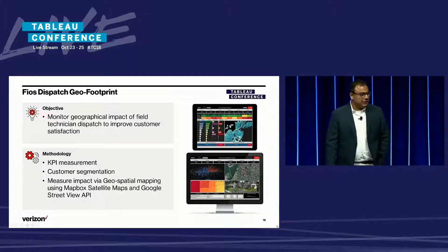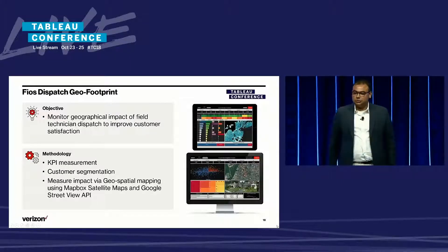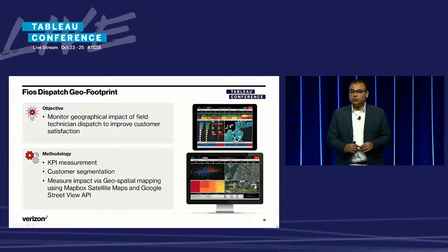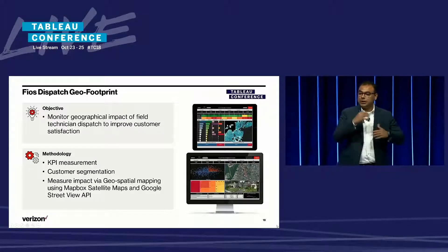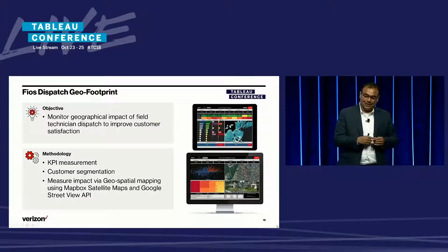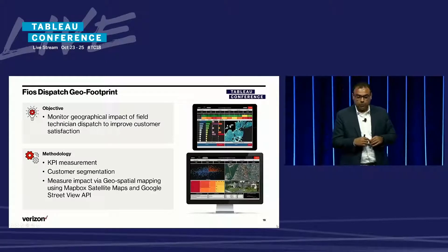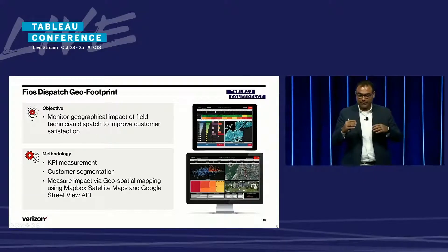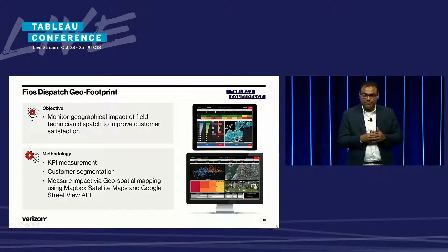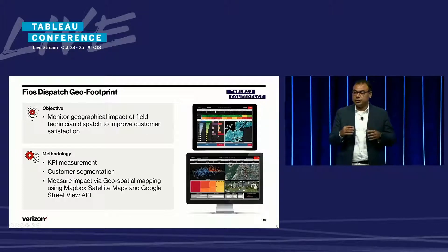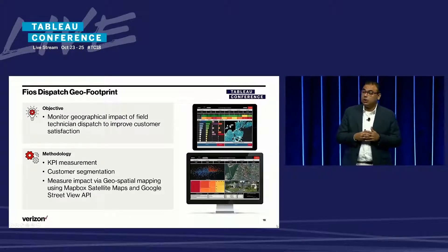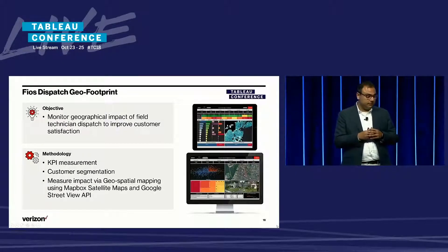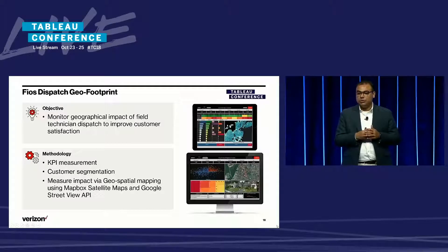Similar to the call centers, where we have certain customers calling us multiple times, in our dispatch space we have certain households that require multiple dispatches to be sent for troubleshooting their issues. The objective here was to monitor the geographical impact of field technician dispatch activity to improve customer satisfaction — and when I say geographical impact, it is not only at the state and zip code level, but at the individual household level.